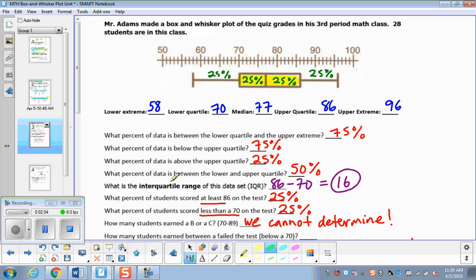All right. What percent of the students scored at least an 86 on the test? So at least an 86 would be this part right here, which is a fourth, so 25% of the data. What percent of the students scored less than a 70 on the test? So 70 or less right there, that'd be 25% of the data.